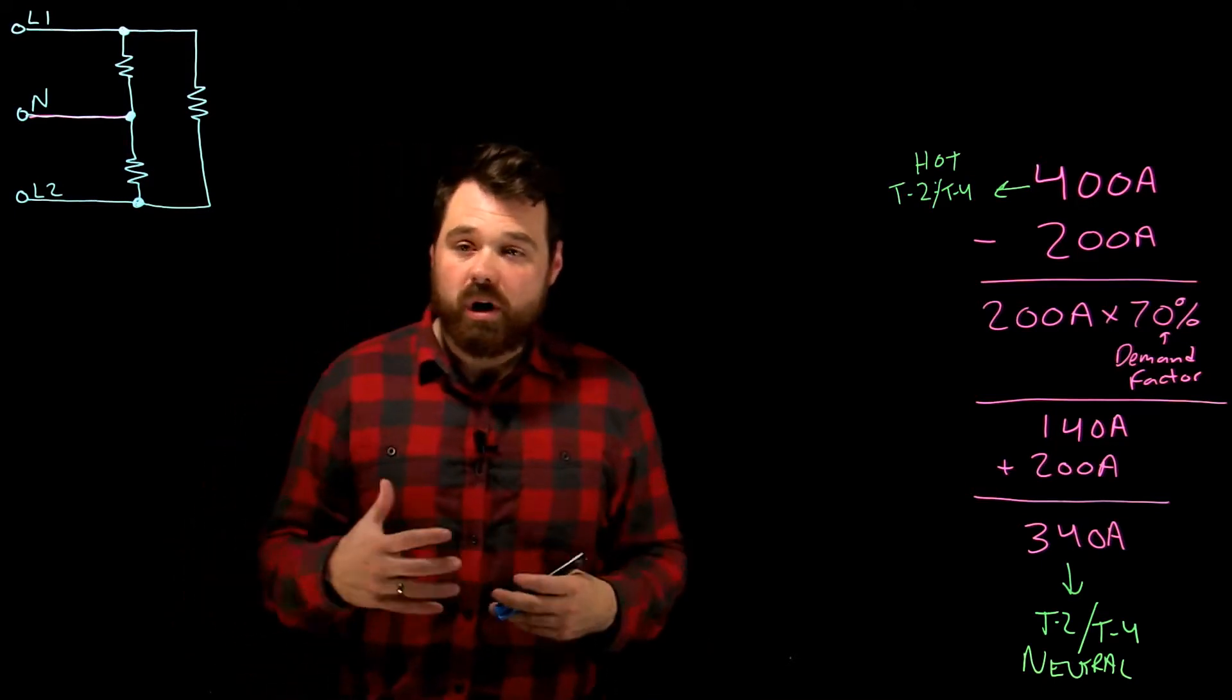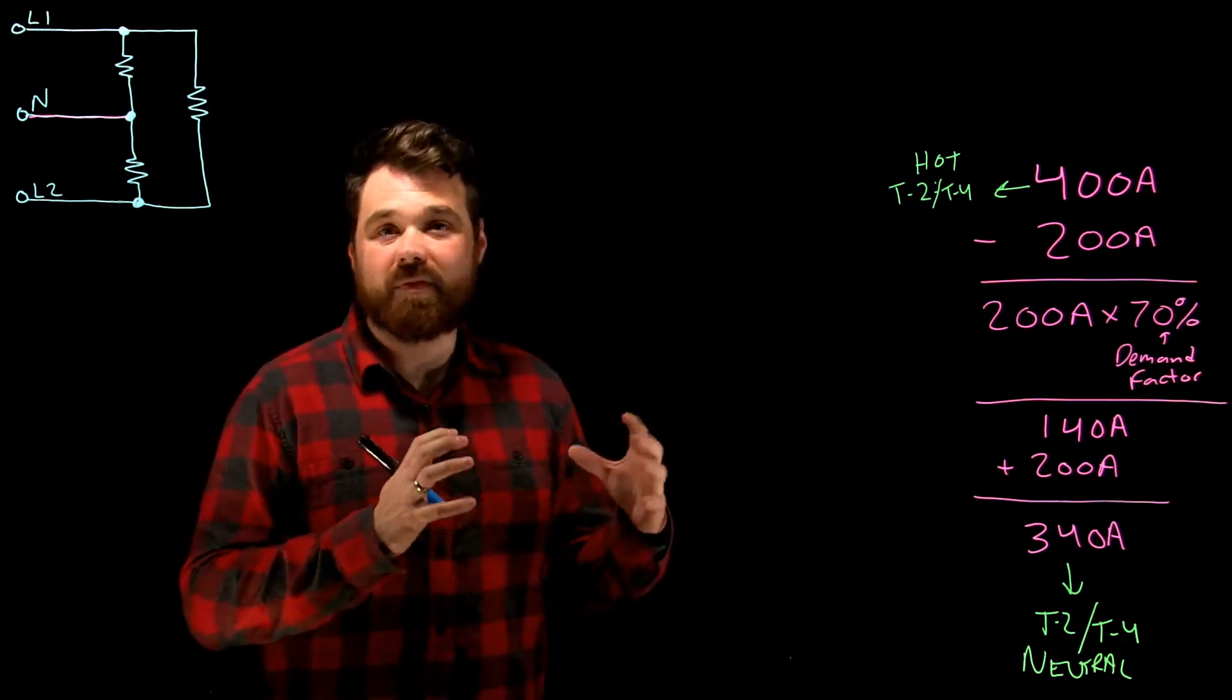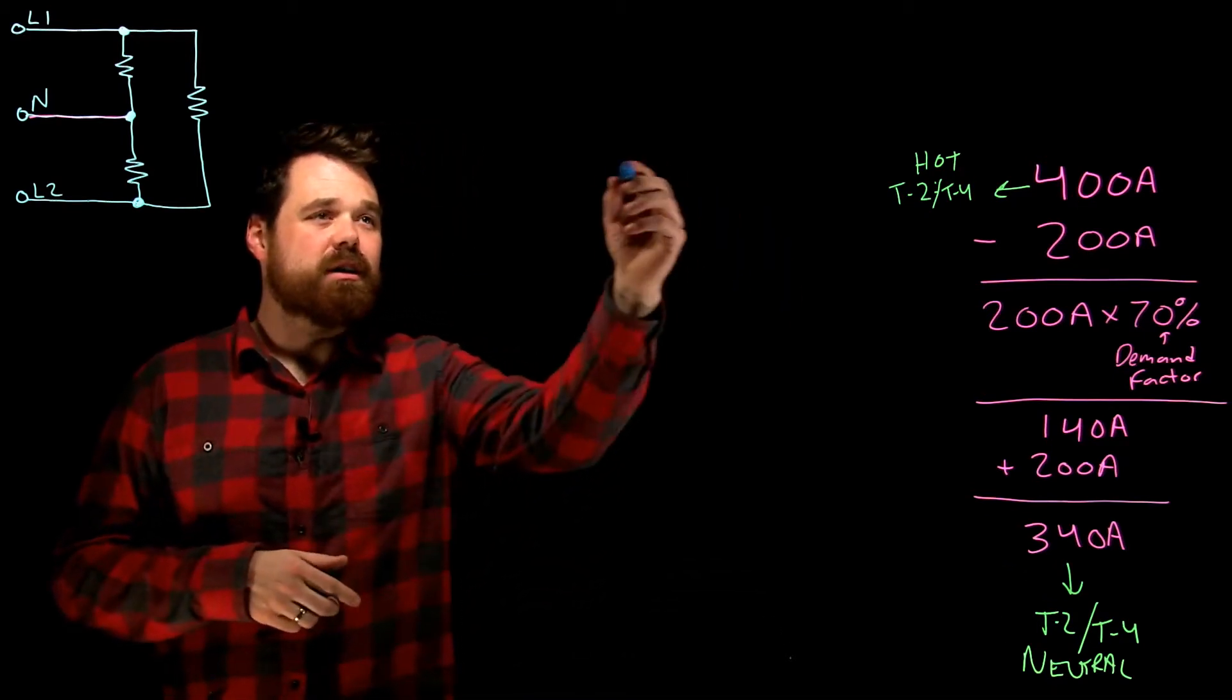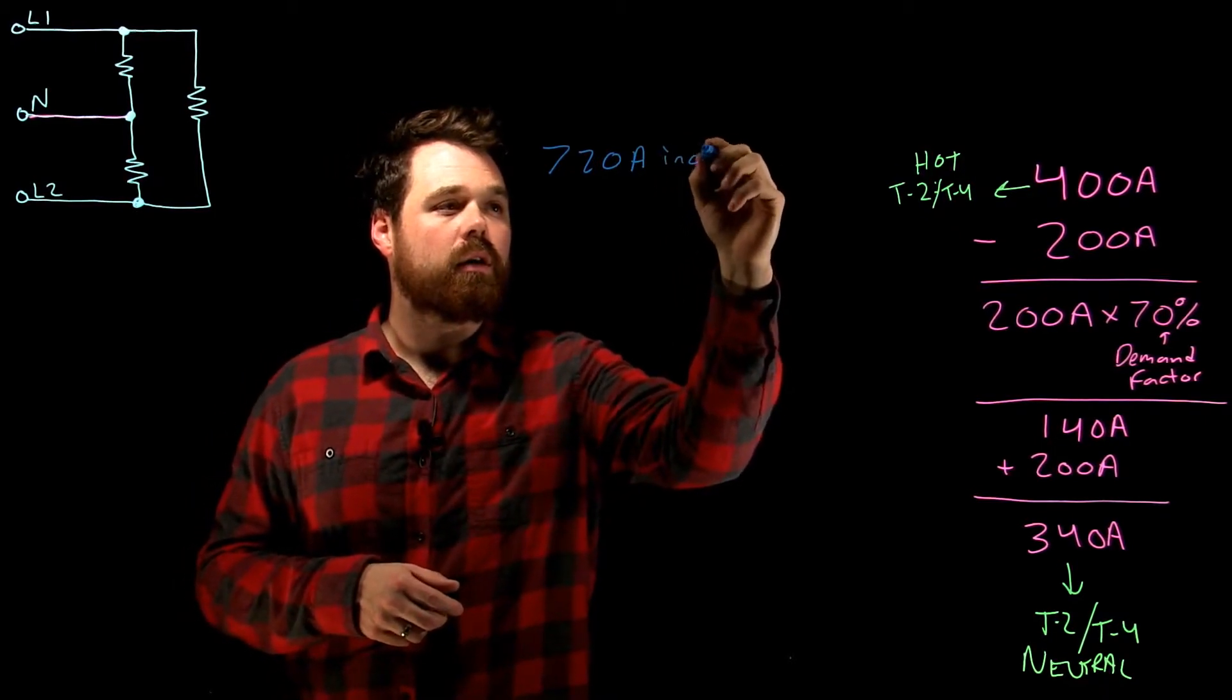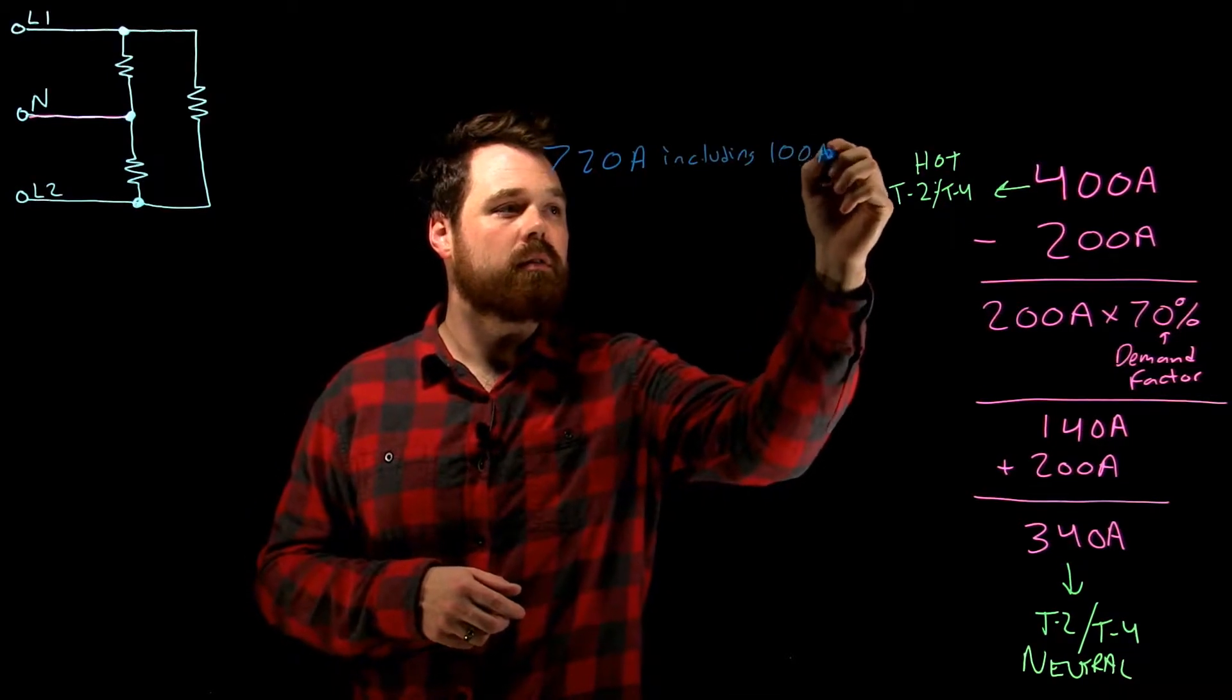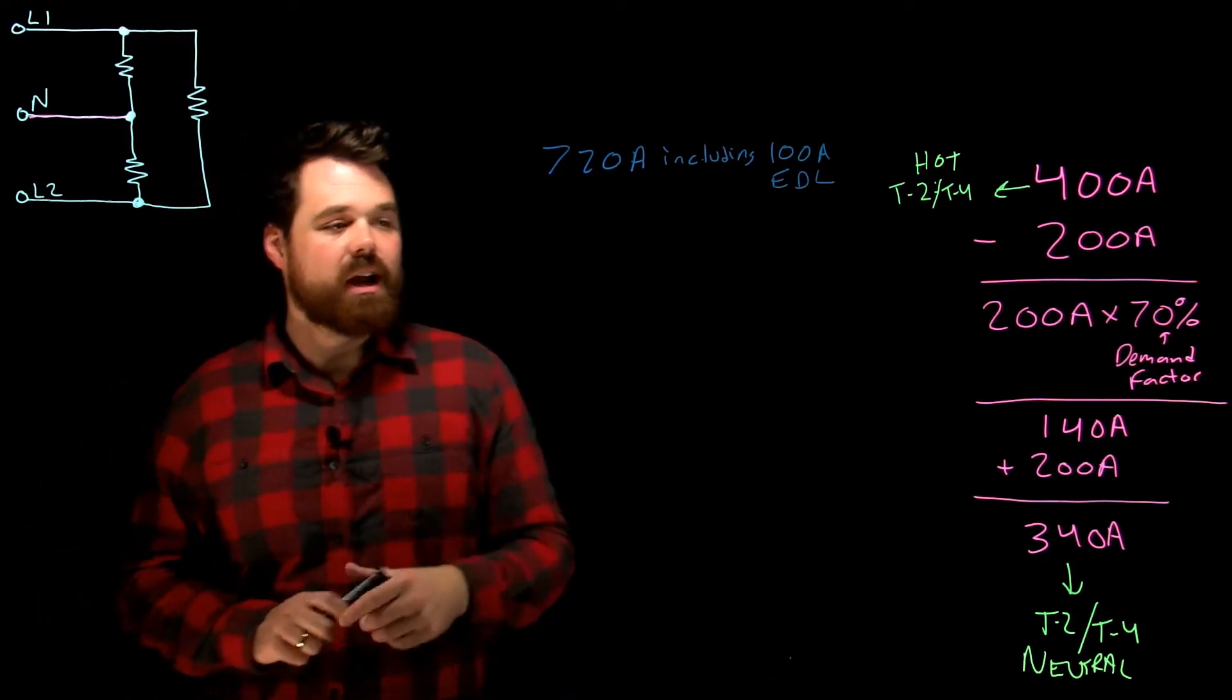So it can get a little bit more complicated. Let's say hypothetically if you did have that electric discharge lighting, which would be like fluorescent lights, things like that. So basically how that would work is let's say we had 720 amps, including 100 amps of electric discharge lighting.